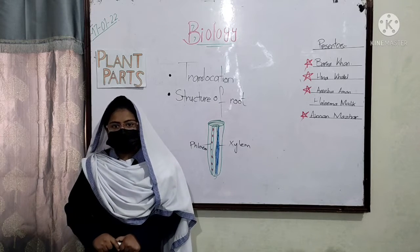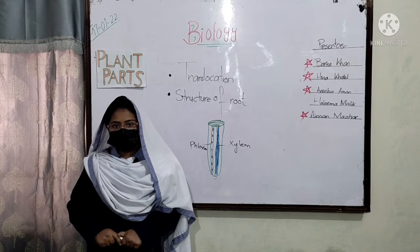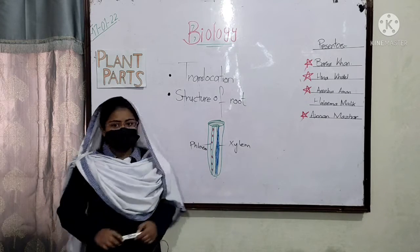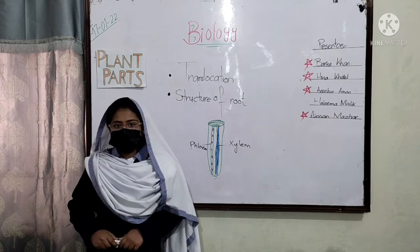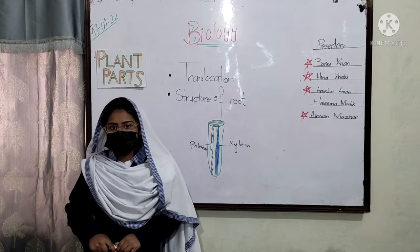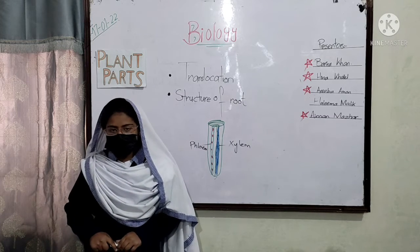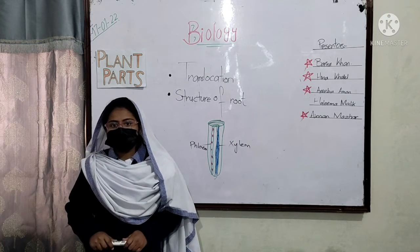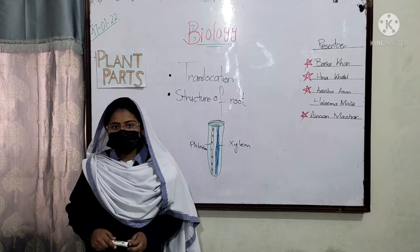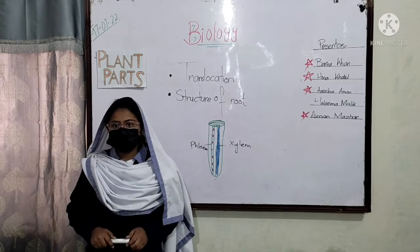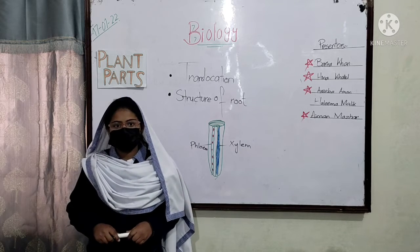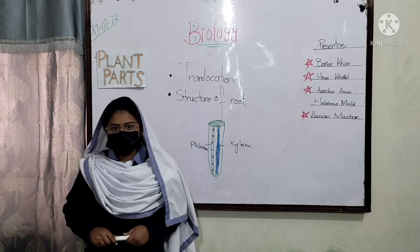Assalamu alaikum, my name is Aman. My topic is translocation. Plants prepare food in their leaves. The prepared food is carried by phloem to all parts of the plant. The movement of prepared food from leaves to those parts of the plant body where it is needed is called translocation.